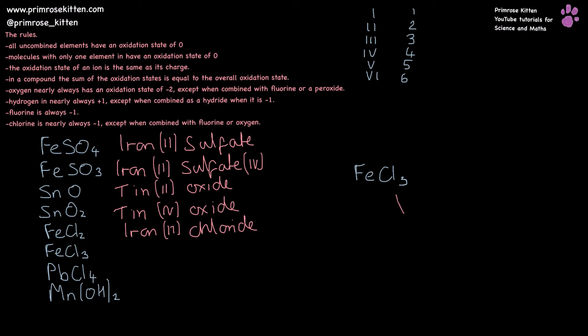Iron chloride again, except this time chlorine is still minus one, but we have three of them, giving an overall minus three charge, which means iron must have a plus three charge, making it iron(III) chloride.